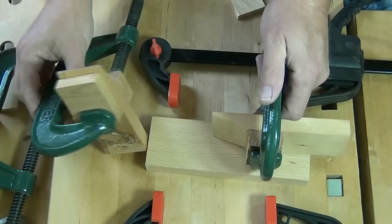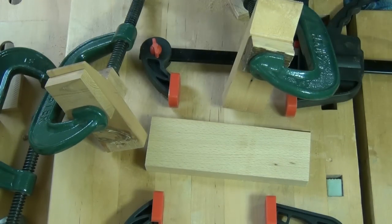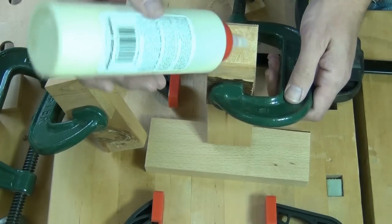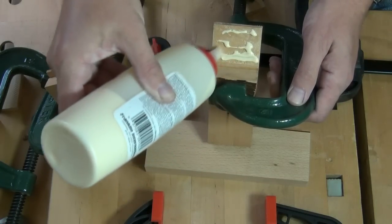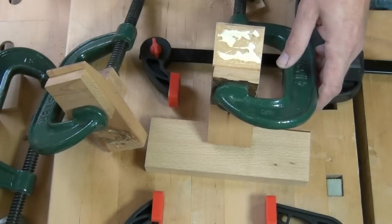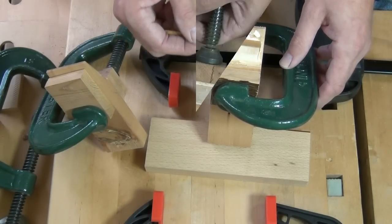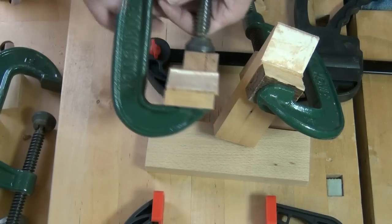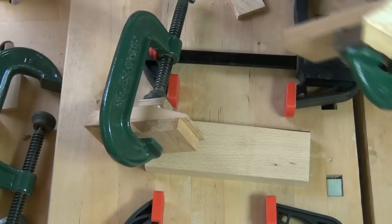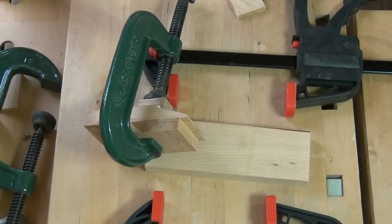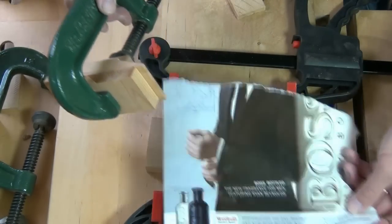Whilst I put glue on the joint surfaces. What we don't want to do is stick it to what we're working on below, so I suggest that we insert a piece of glossy paper underneath there.